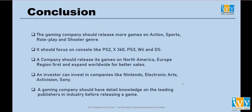With this, we come to the conclusion answering the problem statement. The gaming company should release more games on Action, Sports, Role-Playing, and Shooter genres. It should focus on consoles like PS2, X360, PS3, Wii, and DS. A company should release its game in North America and Europe first because sales in those regions are high, then expand worldwide for better sales. An investor can invest in companies like Nintendo, Electronic Arts, Activision, and Sony for better profits. A gaming company should also have detailed knowledge of the leading publishers in the industry before releasing a game, and study the sales of these publishers.